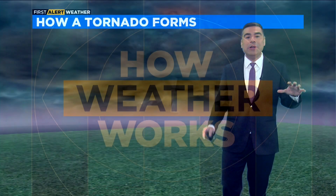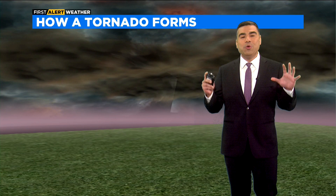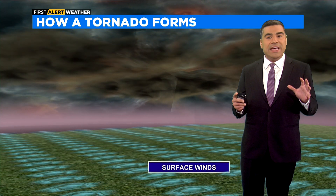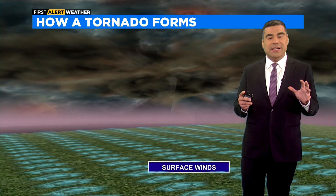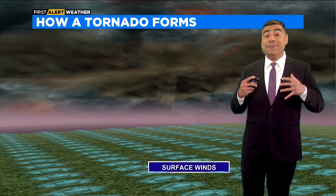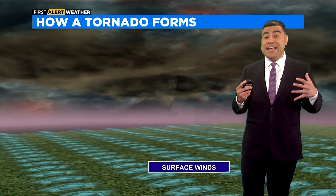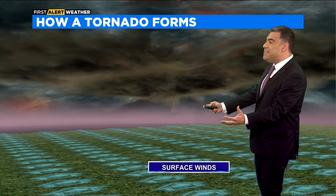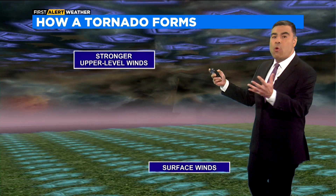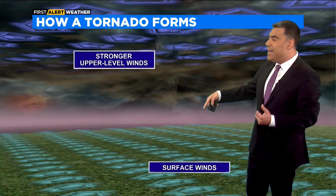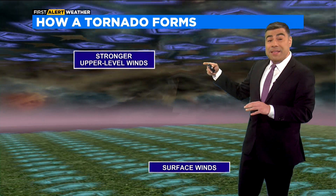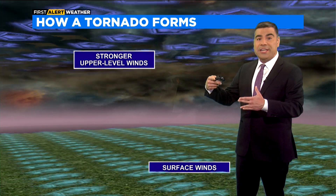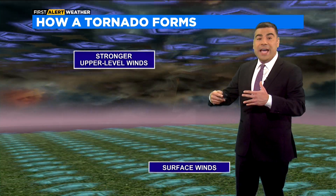Today on How Weather Works, we're going to talk about tornadoes and how they form. It all comes together with winds coming in at different directions and at different speeds in the atmosphere. At the surface we could have winds coming out of the south, and an acceleration of winds — what we call wind shear — as you go higher up in the atmosphere, with winds sometimes crisscrossing from an opposite direction, which allows for natural rotation.